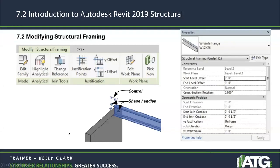Welcome back to Revit 2019 Structural Framing Fundamentals. I'm Kelly, and we'll be talking about chapter 7.2, going over modifying structural framing. The default connections of columns, beams, and braces might need to be modified to suit special situations, such as when beams are offset from their associated level or cantilevered beyond a framing member.